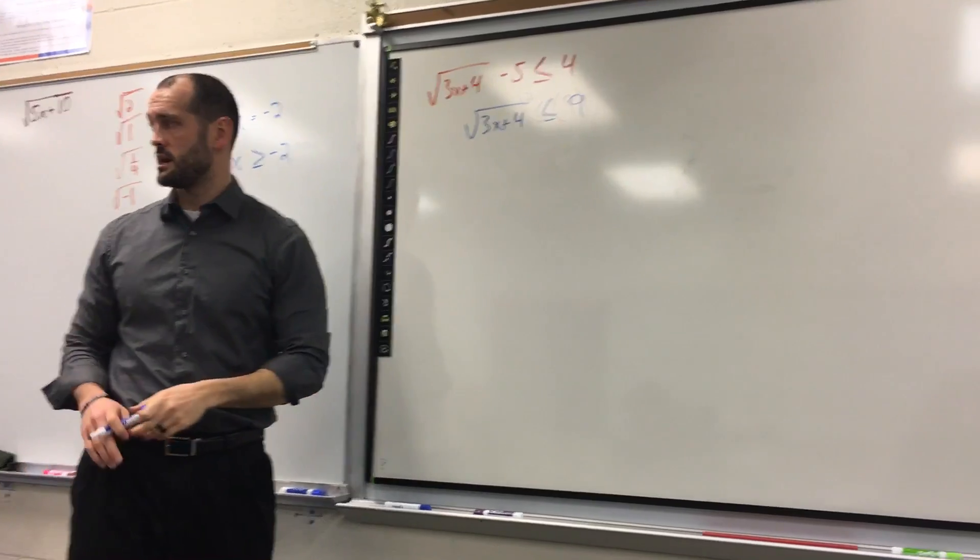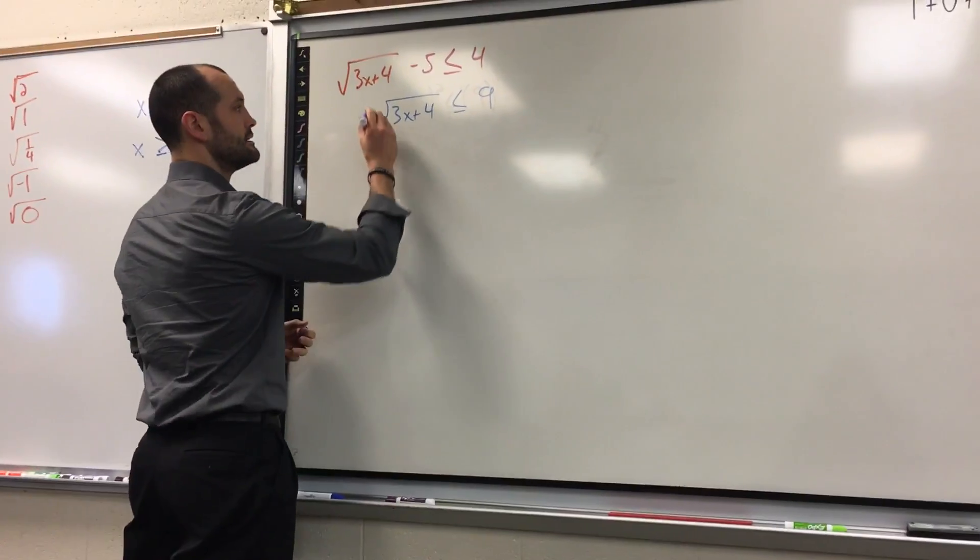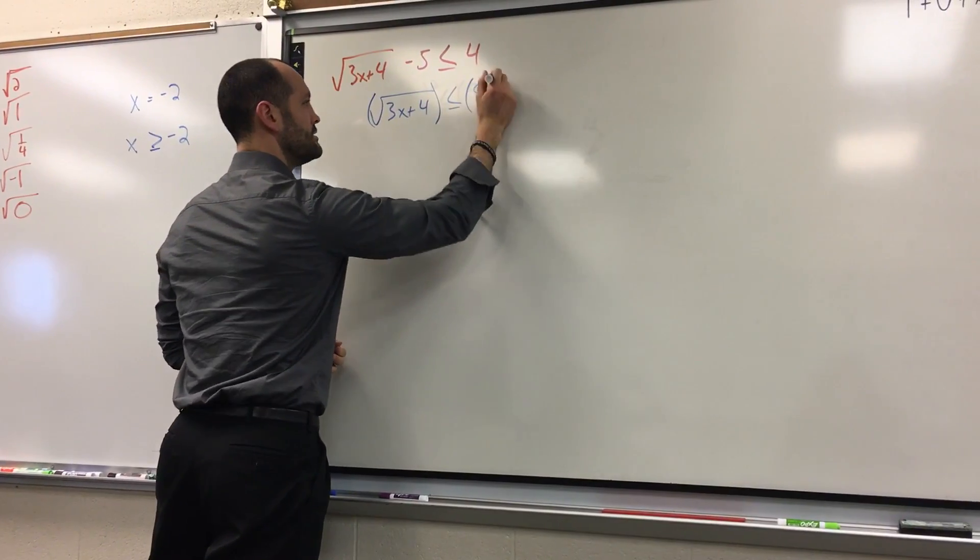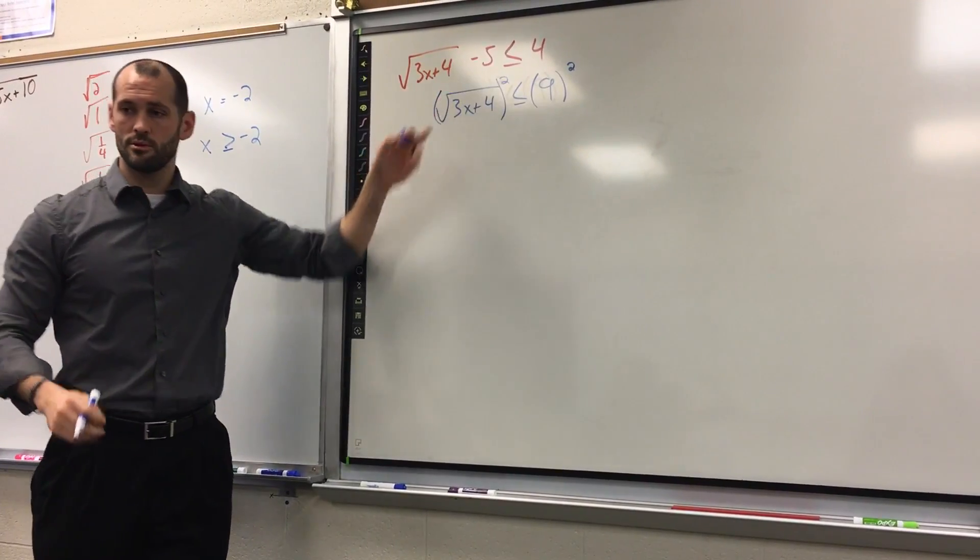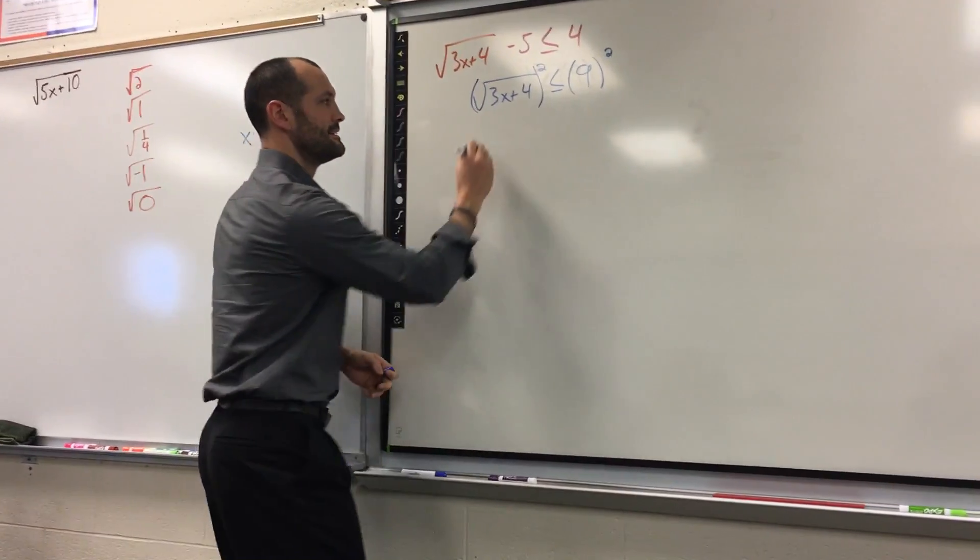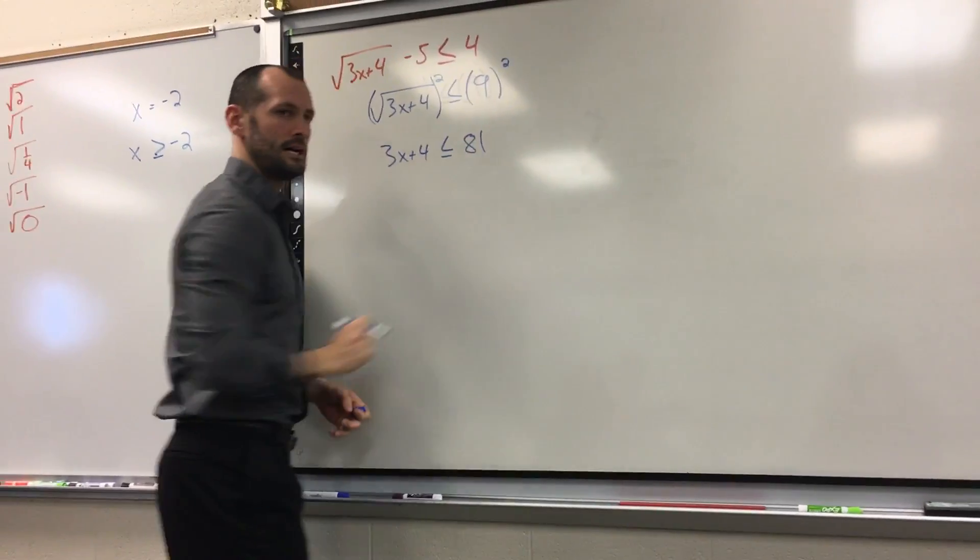I'm treating it exactly like an equal sign. I want to get rid of the radical. Would you square? I would love to. When we square a square root, what are we left with? 3x plus 4 is less than or equal to 81. Money.